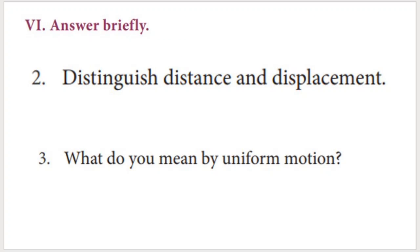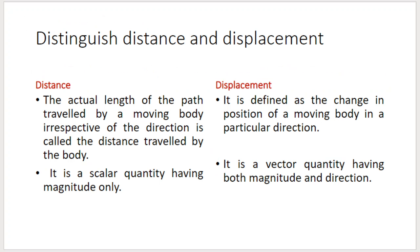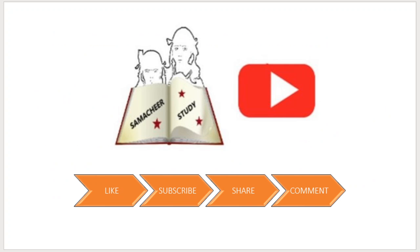Distinguish distance and displacement. Distance is the actual length of the path traveled by a moving body, irrespective of direction — it is a scalar quantity. Displacement is the change in position of a moving body in a particular direction — it is a vector quantity. The similarity: both are measured in the same unit, that is meters. If you like this video, please subscribe and share it with your friends. Thank you so much for watching.